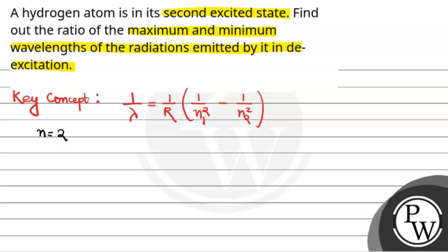Second excited state hai toh n ka value 3 ho jayega. Aur wo de-excitation kar raha hai, matlab niche aa raha hai — n=3 se n=2 aayega aur n=1 aayega. Humein batana hai ratio of maximum and minimum wavelength. Energy is inversely proportional to wavelength. Toh jis mein zyada energy lagegi, uski wavelength minimum hogi.